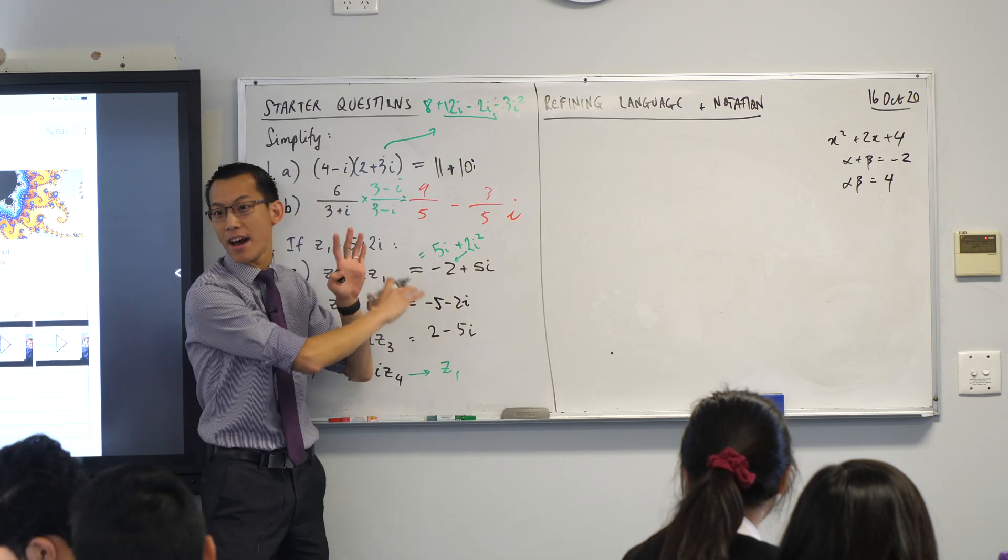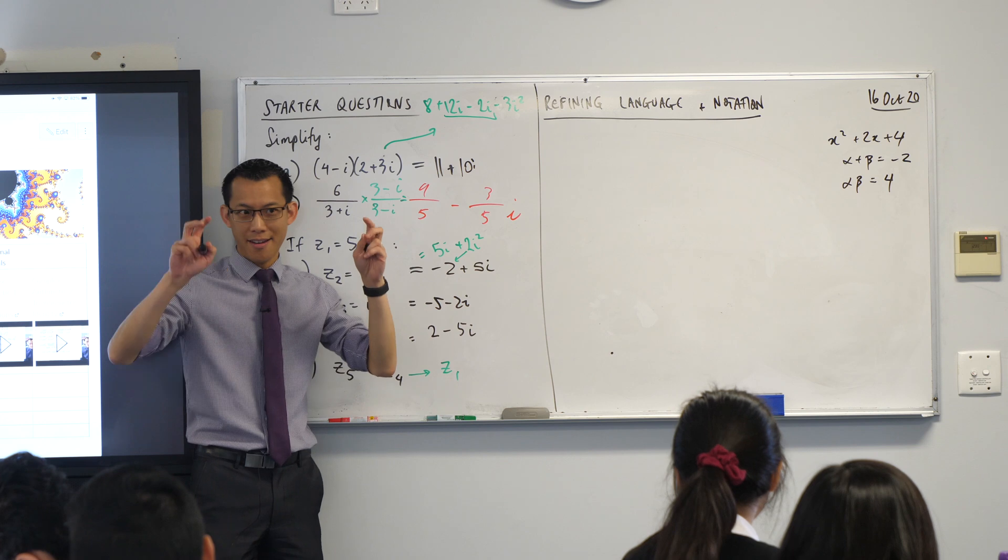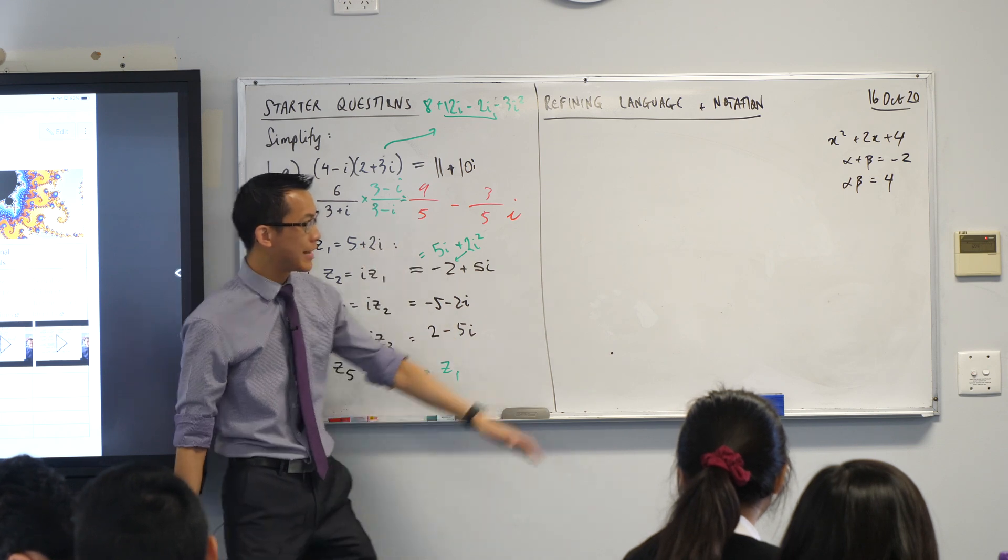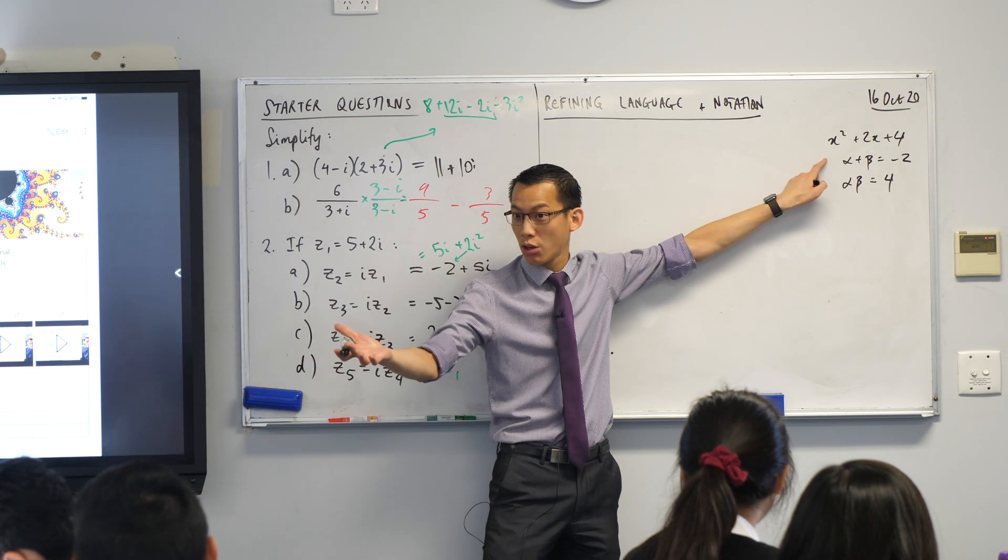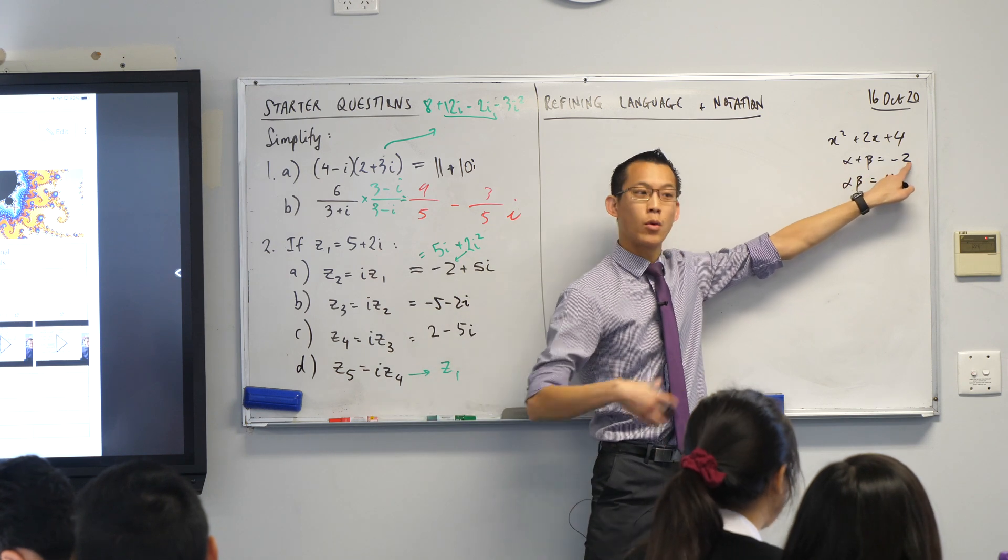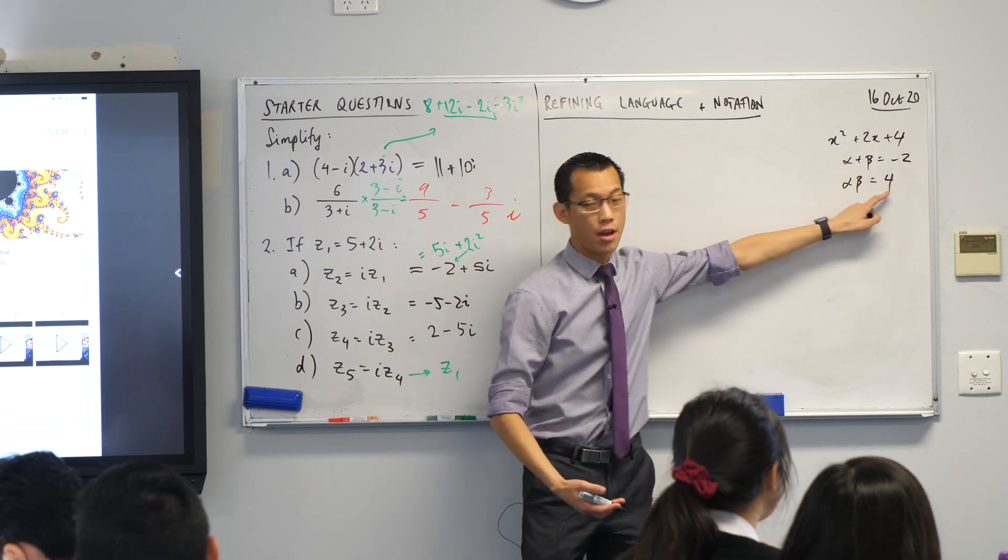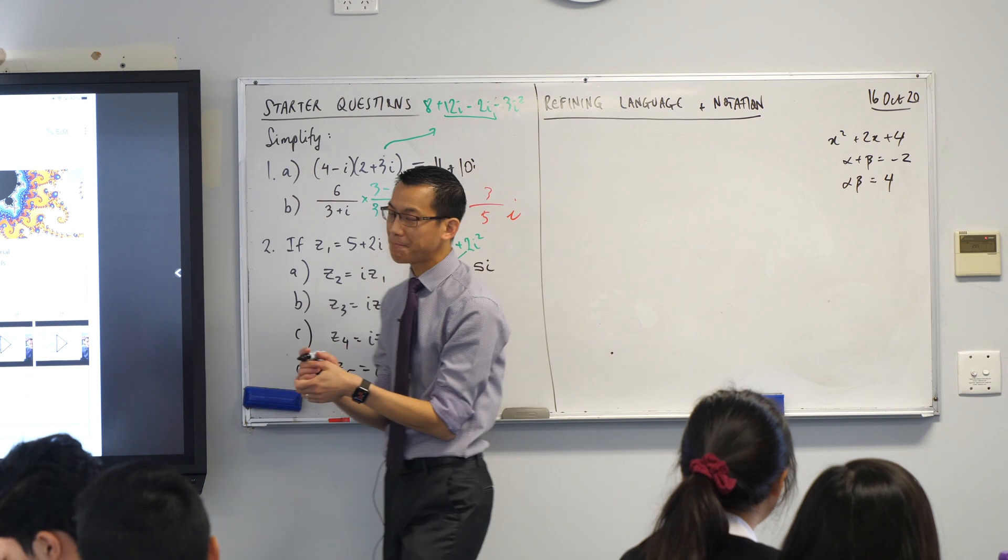Then we said, well, if we expand our number system to include these otherwise invisible numbers, then we can see why. When you add those two complex roots together, you'll get this. When you multiply those two complex roots together, you get this. When we went ahead and proved that, right?